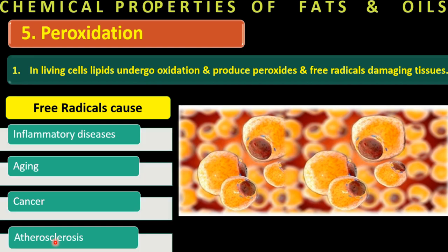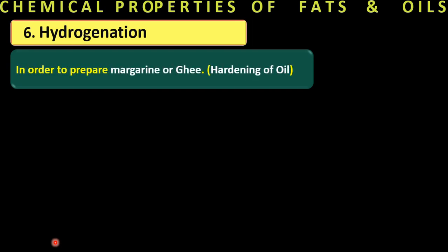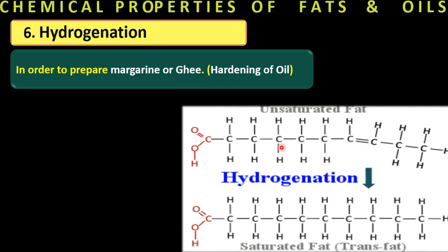The next property is hydrogenation. In order to prepare margarine or ghee — which is liked in Pakistan, the subcontinent, Bangladesh, India, and Afghanistan — oils can be converted by adding hydrogen. Hydrogenation, in fact, is the preparation of ghee: unsaturated fats are converted to approximately saturated fats (trans fats), which is known as ghee. You can see that an unsaturated fat with a double bond, after addition of hydrogen, becomes a saturated fat — this is ghee.